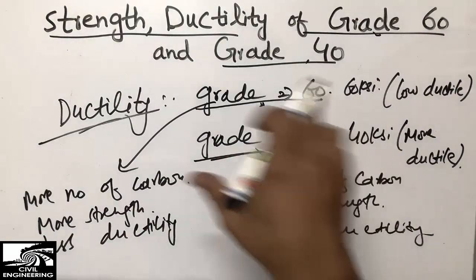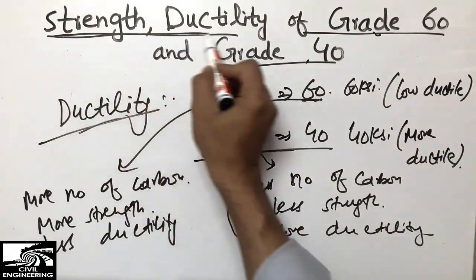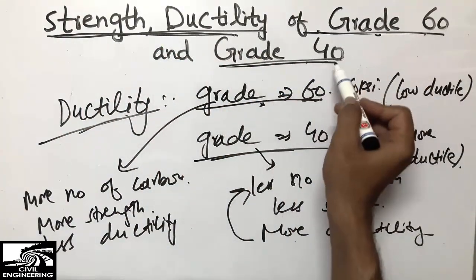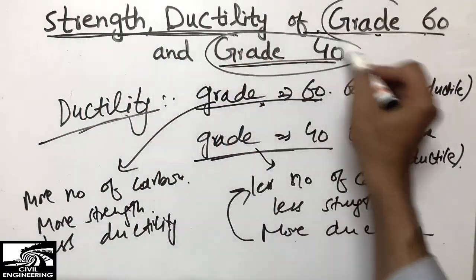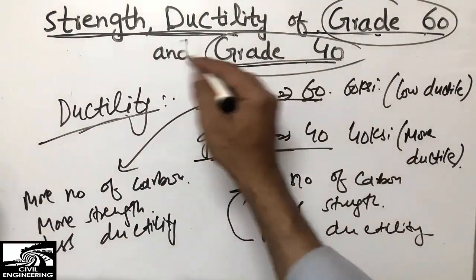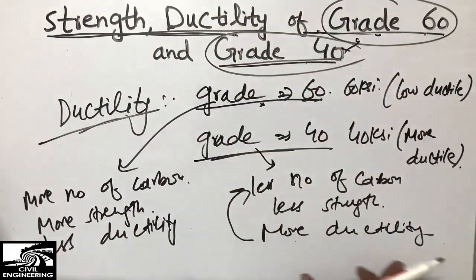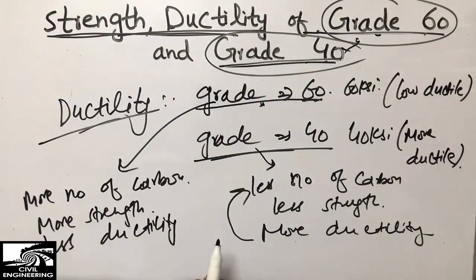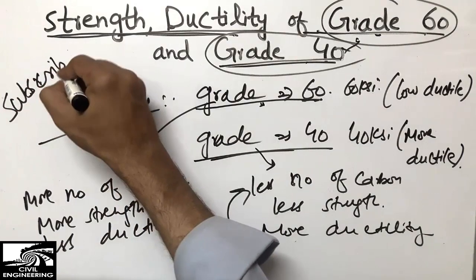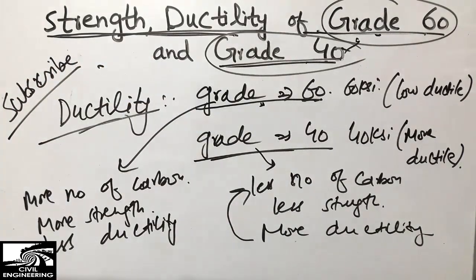So this was the very important topic of strength and ductility of Grade 40 and Grade 60 steel, which are mostly used in daily life construction projects. If you have any questions, please comment and we will get back to you as soon as possible. Thank you for watching, and don't forget to subscribe to our channel for more civil engineering videos.